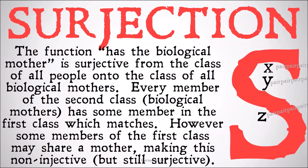The function 'has the biological mother of' — so x has the biological mother y — is surjective from the class of all people onto the class of all biological mothers. Every member of the second class, biological mothers, has some member in the first class which it matches. However, some members of the first class may share a mother, making this non-injective but still surjective, because every member of the second class is used, i.e. the second class is the range.